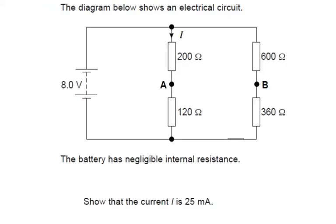The diagram below shows an electrical circuit. The battery has negligible internal resistance. Show that the current is 25 milliamps. We want to find out this current here.